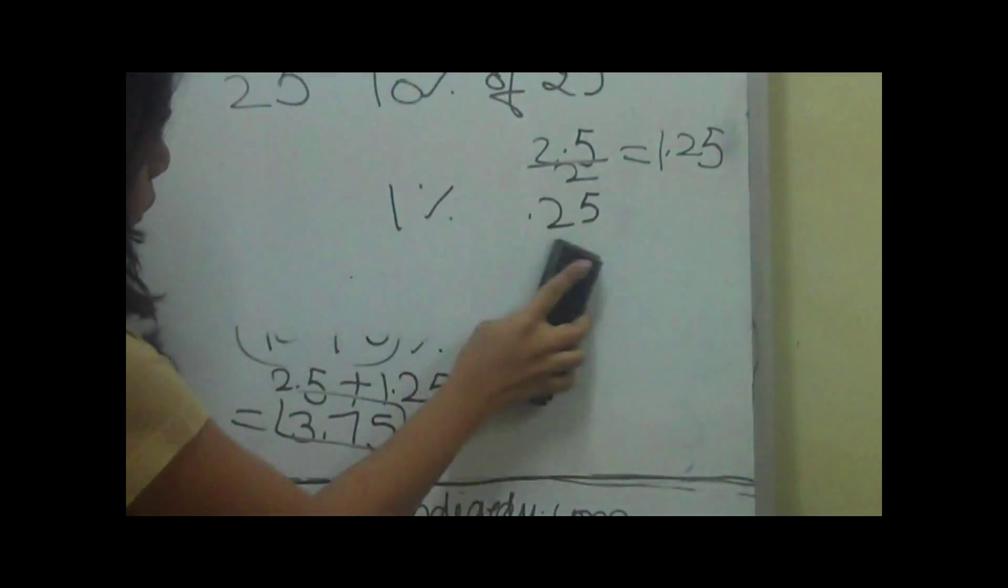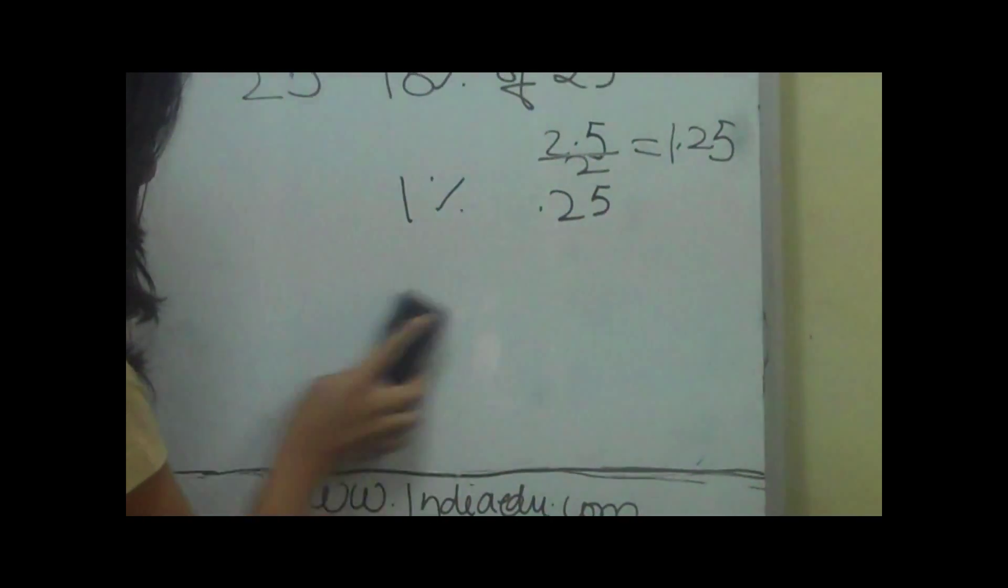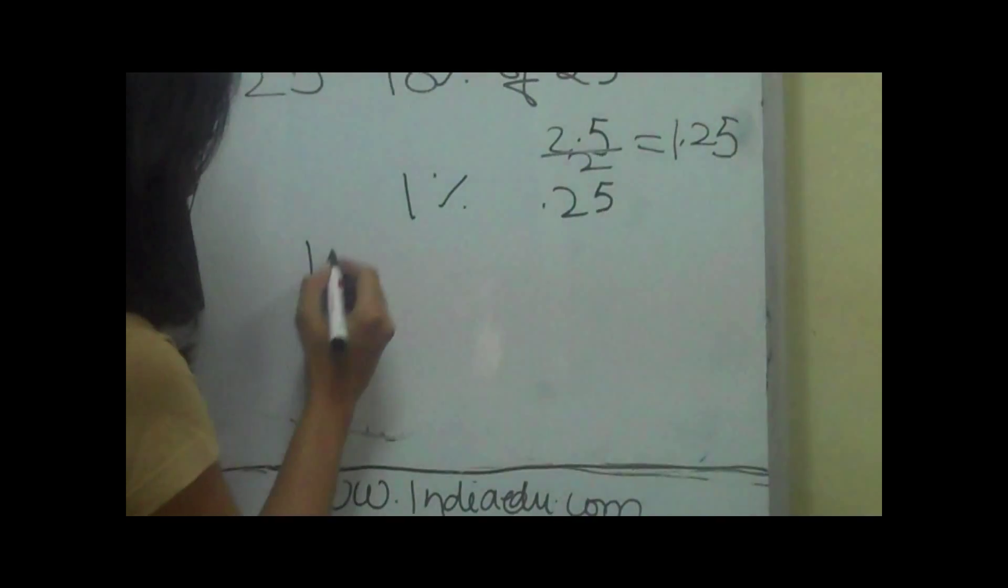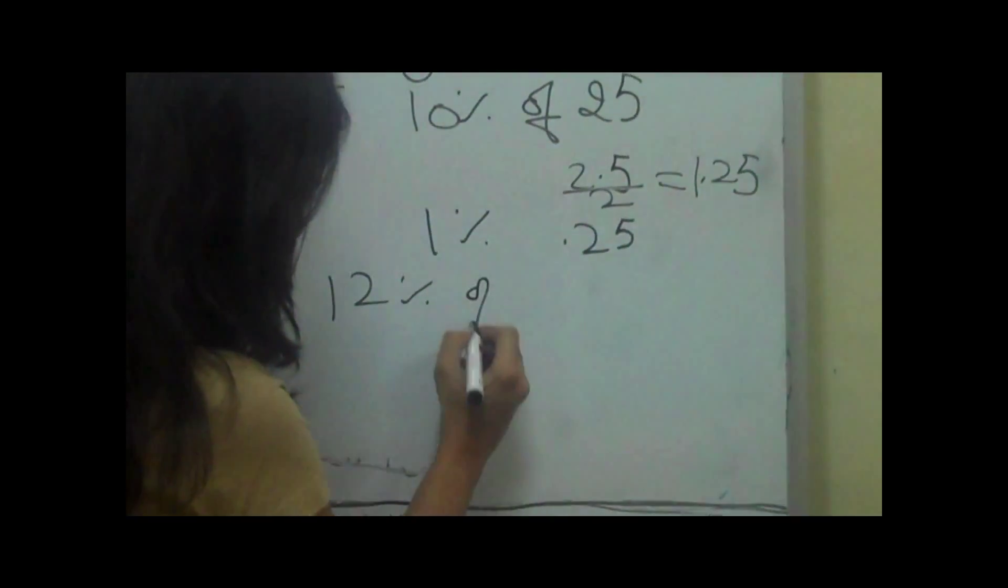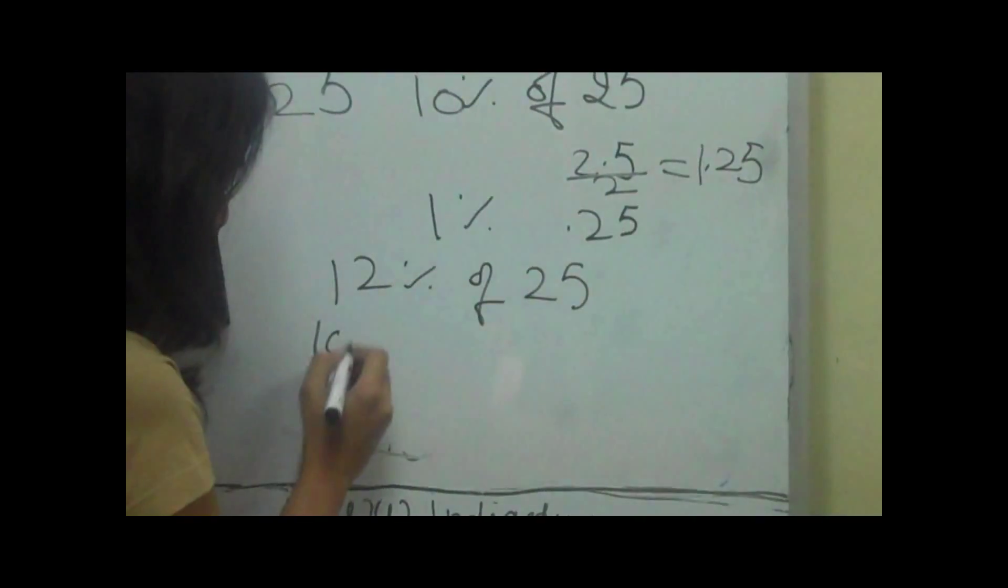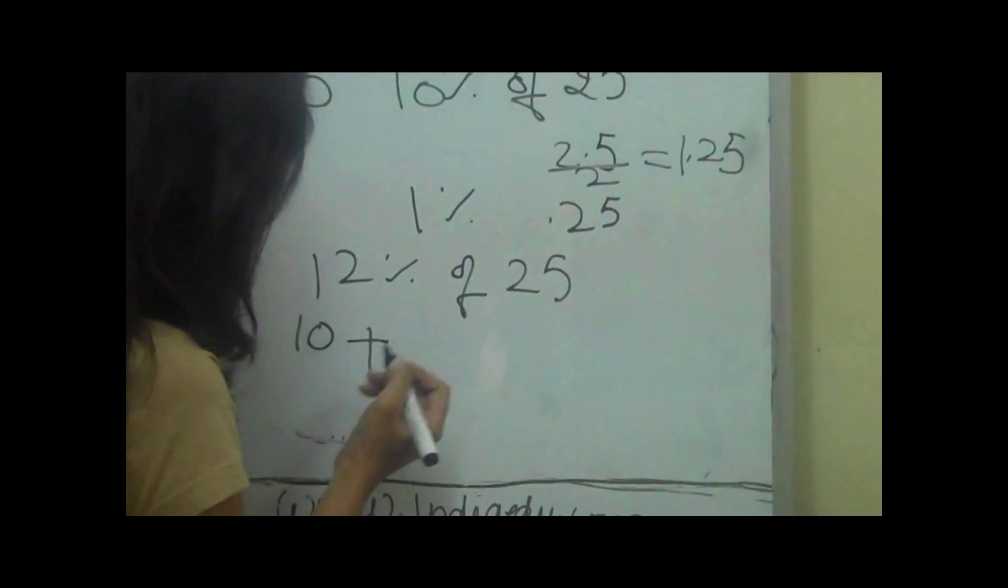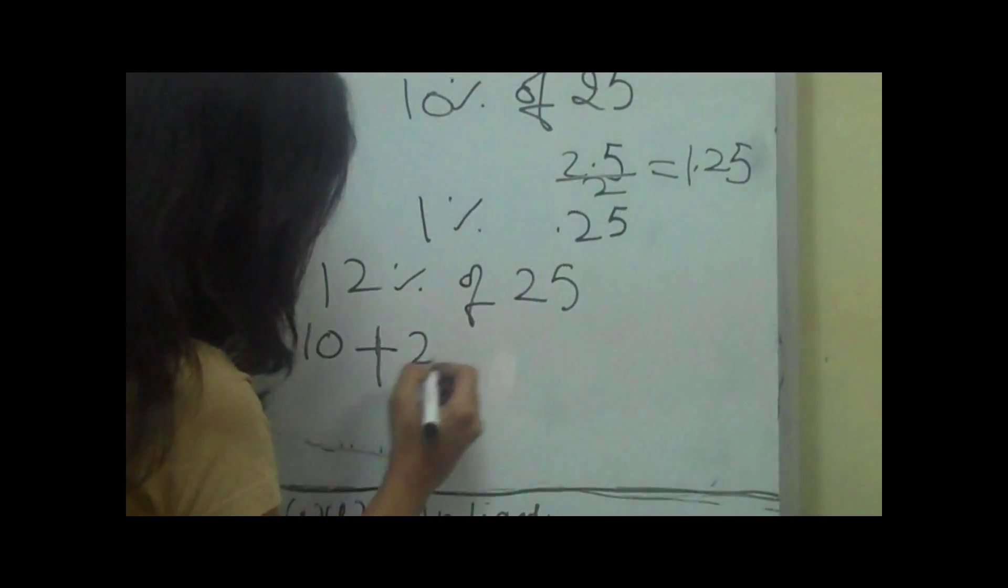Now, if we need to calculate 12 percent of 25, we will simply divide it into 10 plus 2 percent.